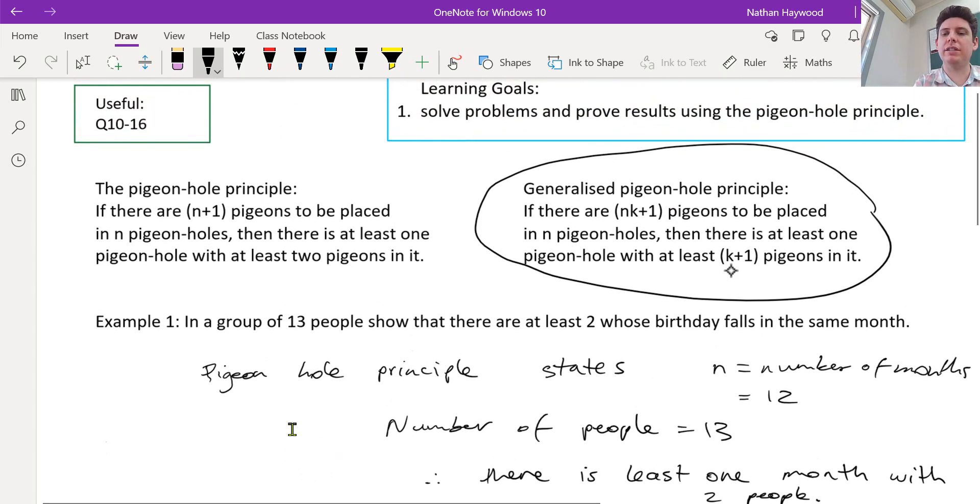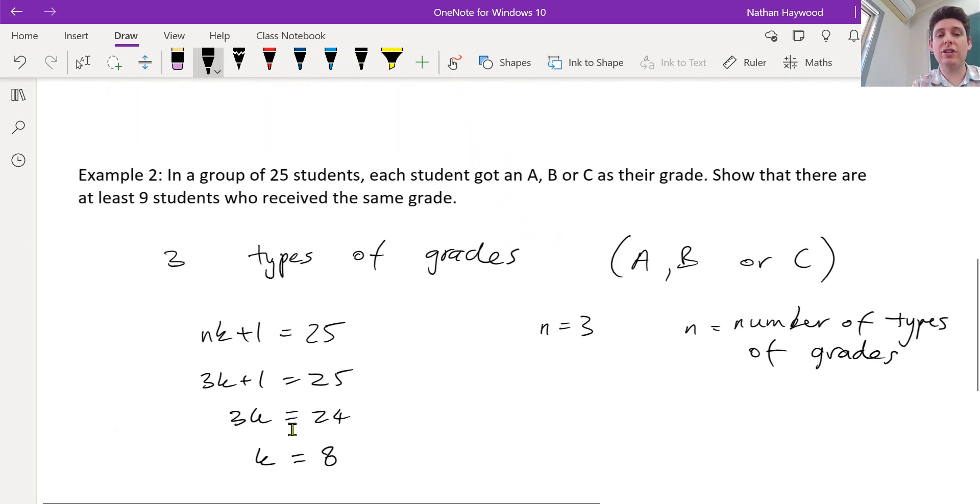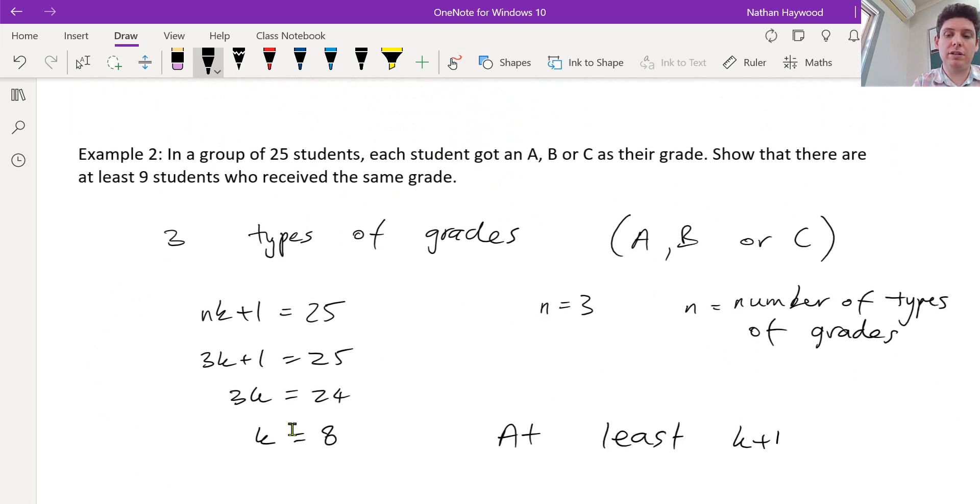The pigeonhole principle says k plus one. So there's at least k plus one. Therefore, nine people at least got the same grade.